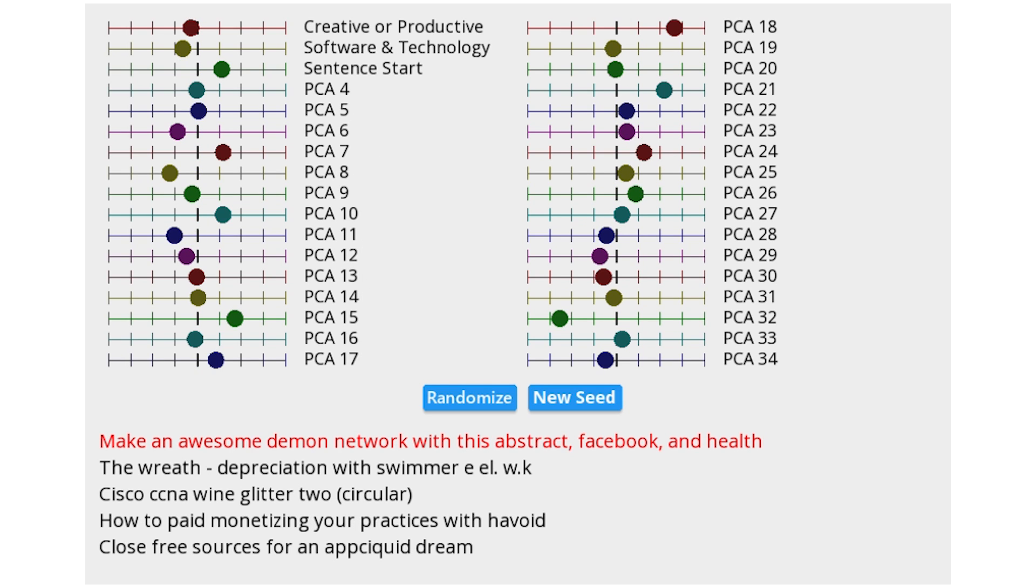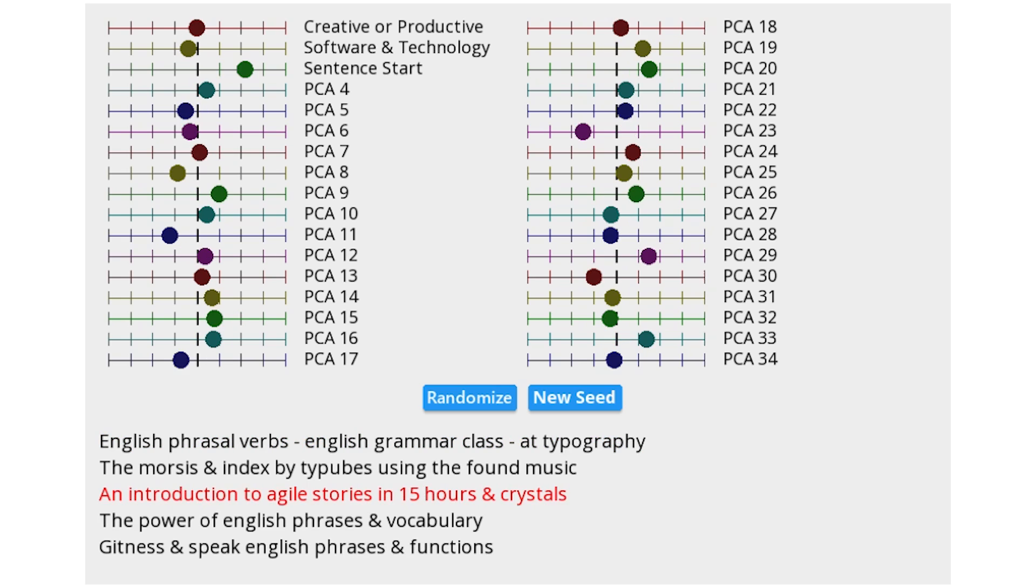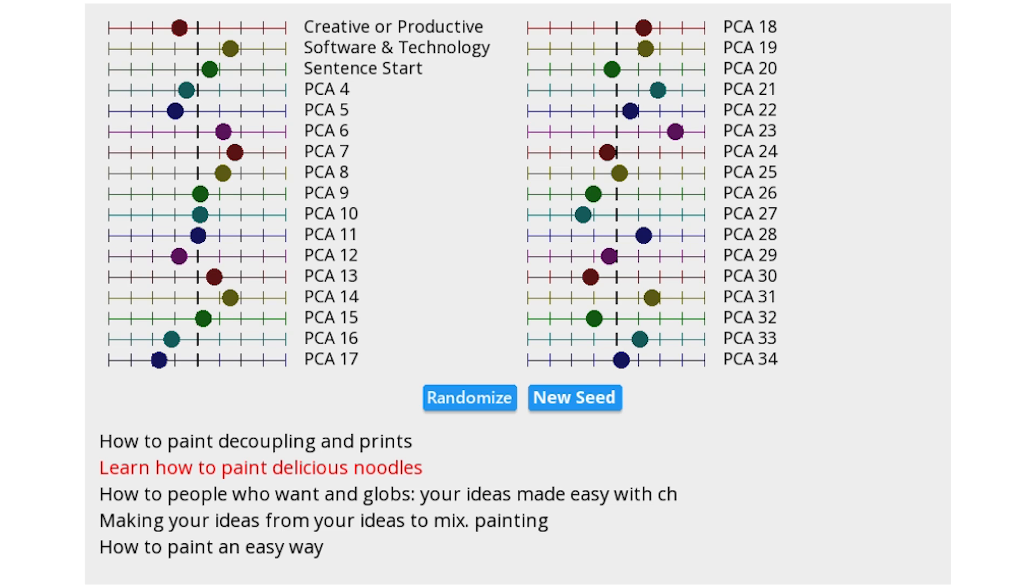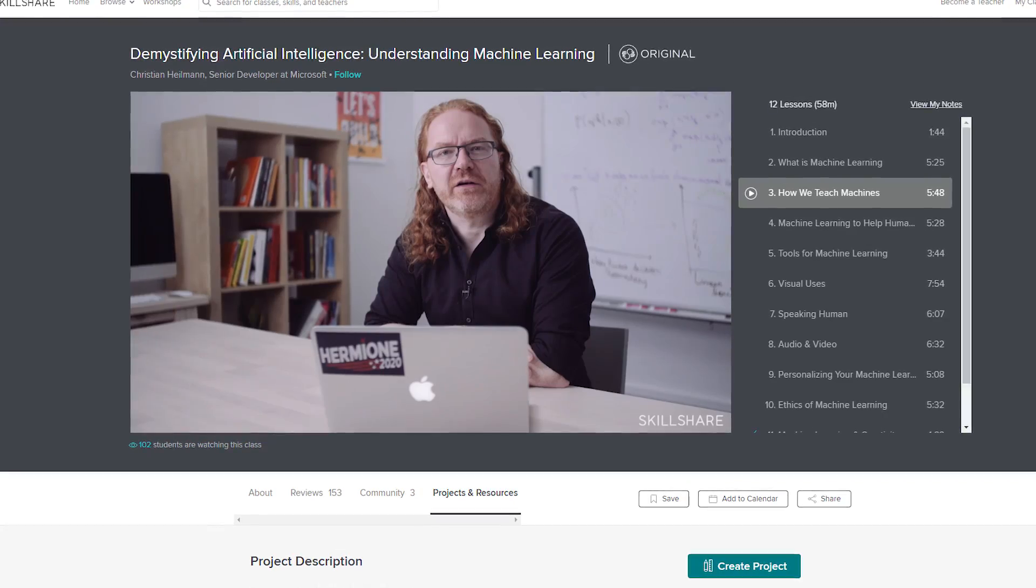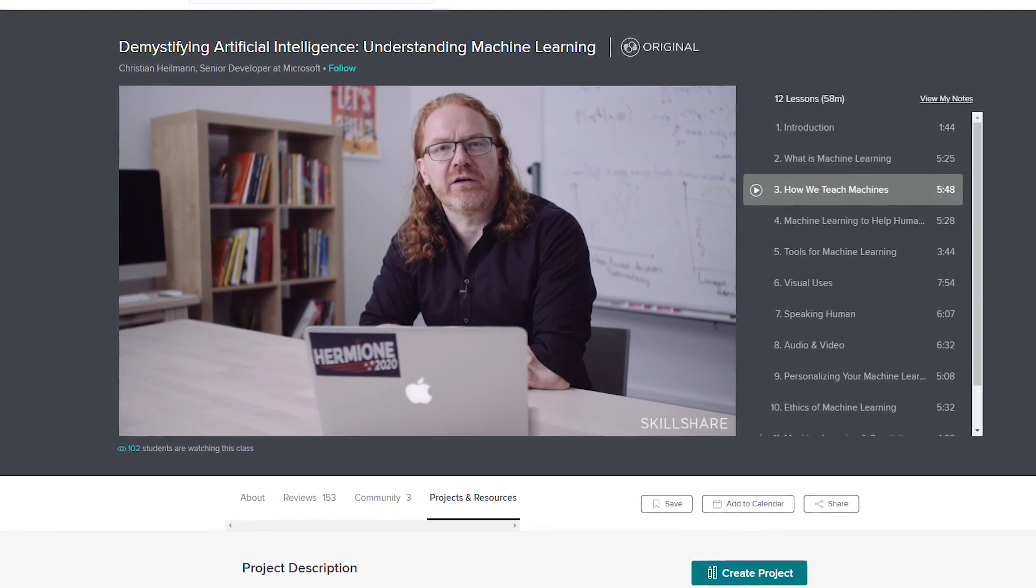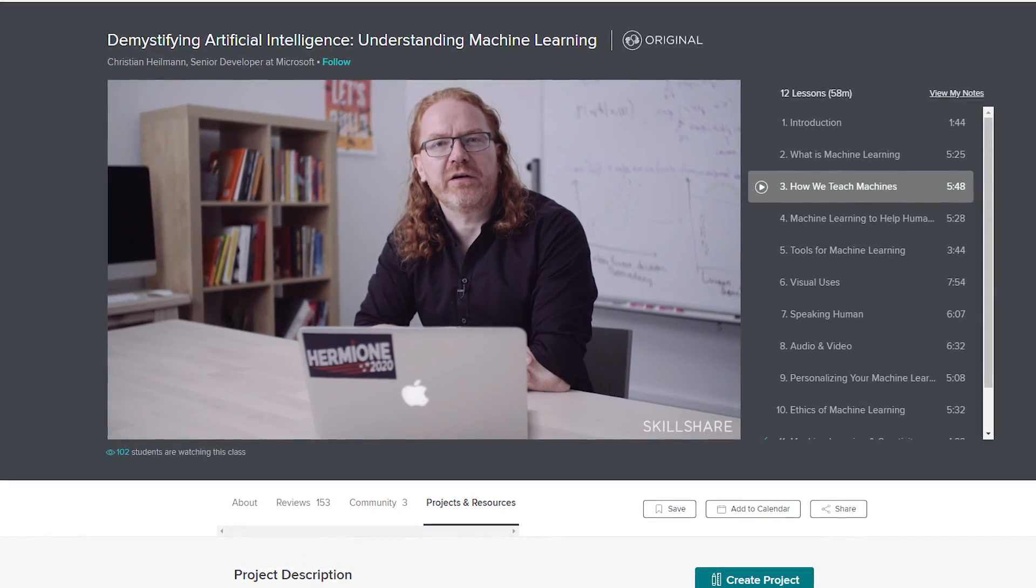And as fun as it would be to make an awesome demon network with this abstract Facebook in health, you should probably check out the real classes on Skillshare if you want to actually learn something useful. And if you're interested in machine learning projects like this one without getting so technical, I can recommend the course Demystifying Artificial Intelligence, Understanding Machine Learning, which is a great introduction.